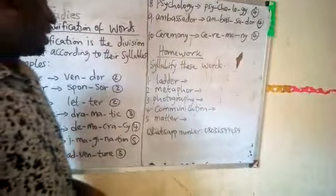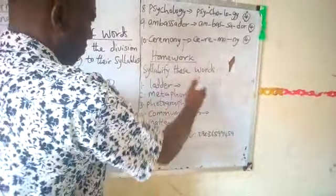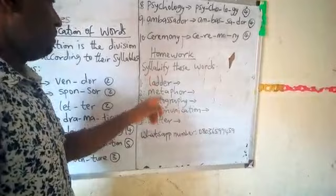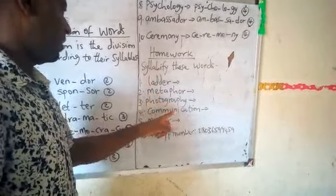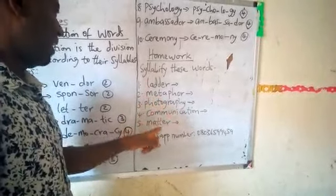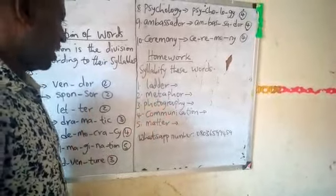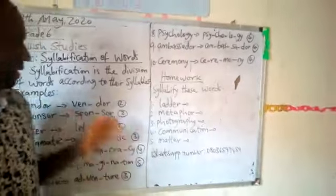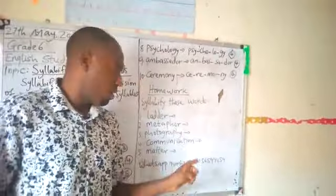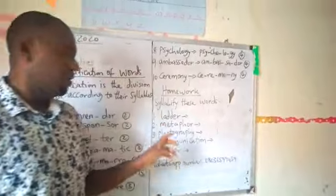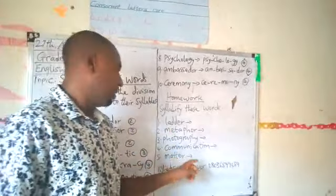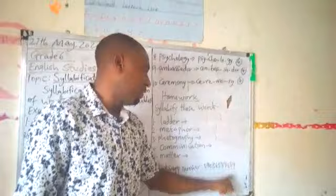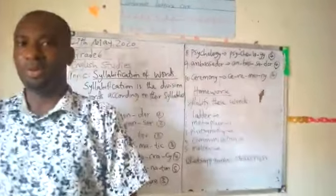For your homework, you are going to syllabify these words: matter, metaphor, photography, communication. If you have any questions from the lesson or your homework, send me a message through my WhatsApp number 010-365-9459. Thank you.